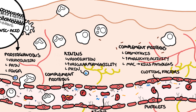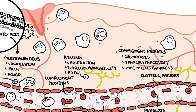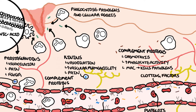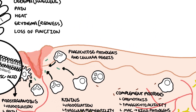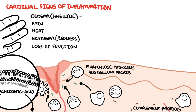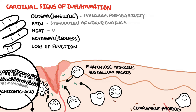The inflammatory mediators promote inflammation, allowing phagocytes to enter the site of injury and phagocytize pathogens and cellular debris. Looking back at the cardinal signs of inflammation and their mechanisms: swelling and edema occurs due to increase in vascular permeability and vasodilation. Pain occurs due to stimulation of nerve endings. Vasodilation increases blood flow to the site of injury, causing redness, erythema, and heat.